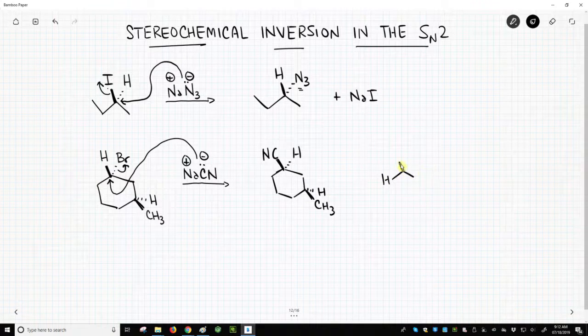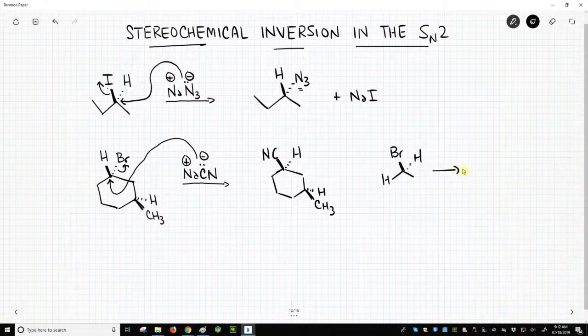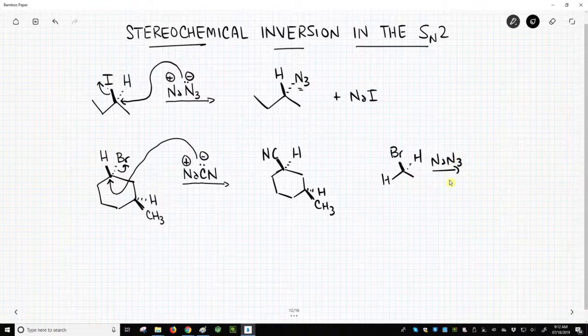let's say we had ethyl bromide, and I did an SN2 reaction on this, even though I've drawn this carbon as if it's a stereocenter, that's not a stereocenter. There are two hydrogens on that carbon. It is not a stereocenter.